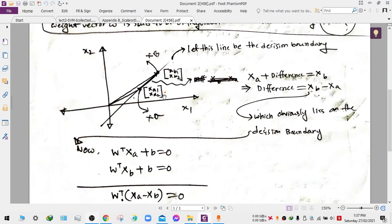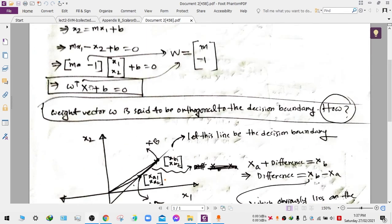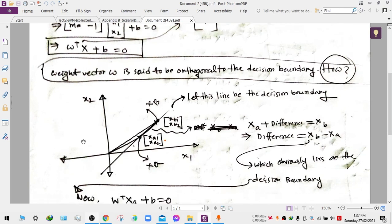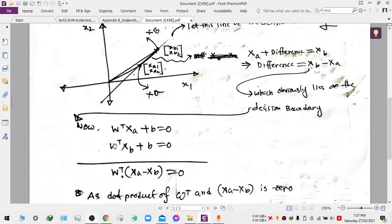We have just replaced this parameter once with the XA vector and once with the XB vector, and we have got these two formulas. So if we subtract the second one from the first one, then we get something like this.